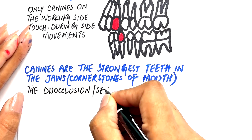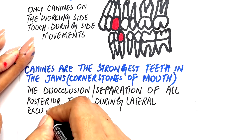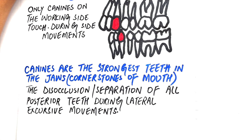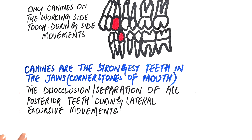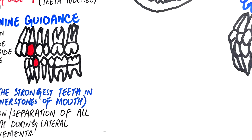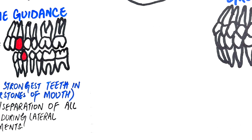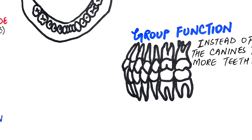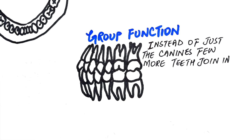Canine guidance refers to the disocclusion or separation of all the posterior teeth during lateral excursive, or side-to-side, jaw movements. During these movements, the only teeth that make contact are the canines. Canines guide the jaw during these lateral movements away from maximum intercuspation, helping it slide safely and smoothly — which is why it's called canine guidance.